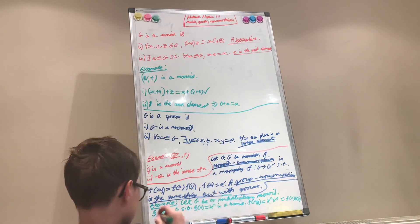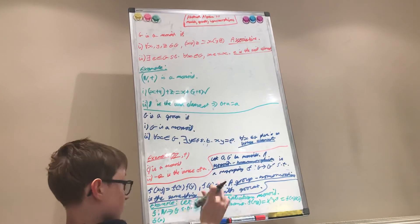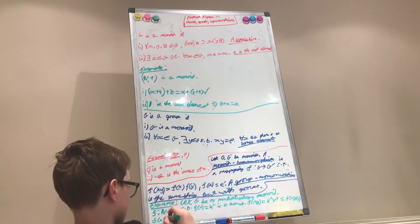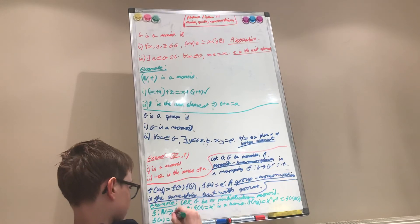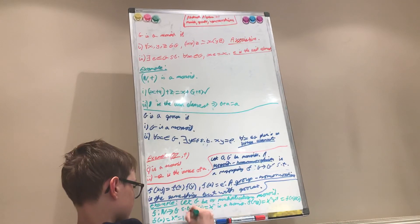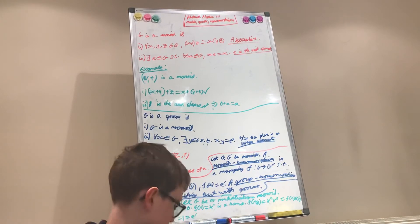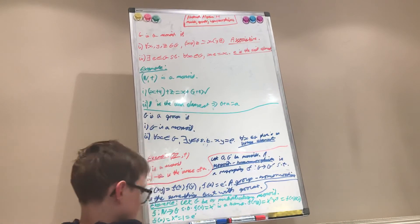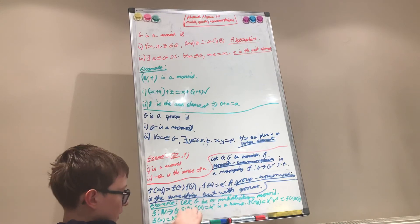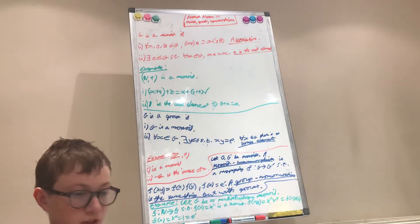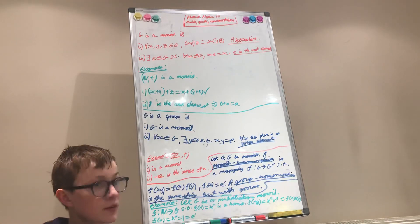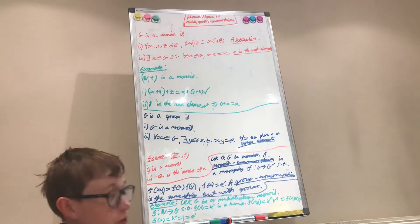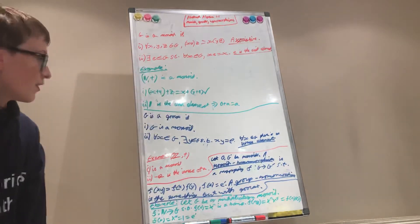And is f(0) — the unit element of the natural numbers under addition — equal to the unit element of G prime? Yes: f(0) equals x to the 0 equals 1 equals e prime. Because 1 is the unit element of a multiplicative monoid. It's very satisfying that I managed to fit all of this onto one board.